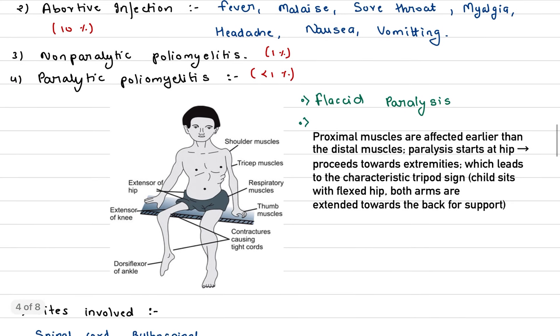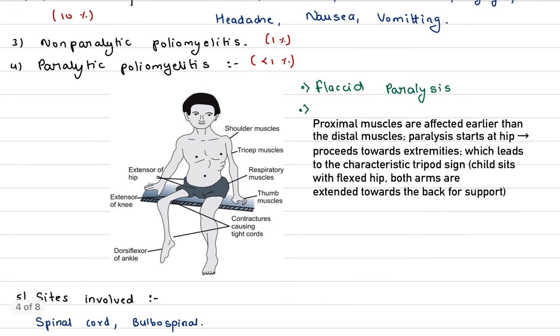Non-paralytic poliomyelitis is seen in 1% of cases. Paralytic poliomyelitis is seen in less than 1% of cases, but this is important. In this case, flaccid paralysis occurs. In this picture, you can see the extensor of the hip and extensor of knee, dorsiflexion of ankle, and muscle extended to take the support of the back.